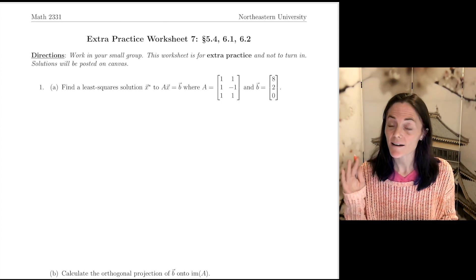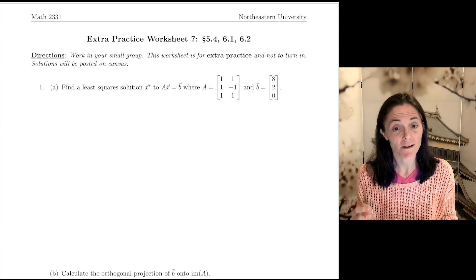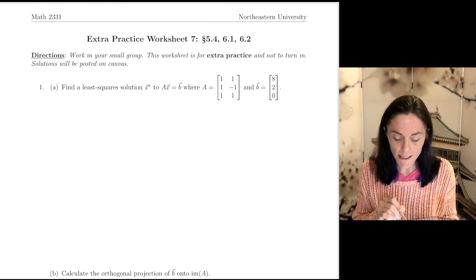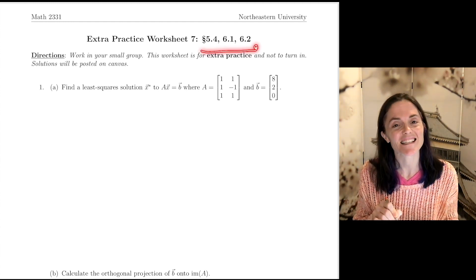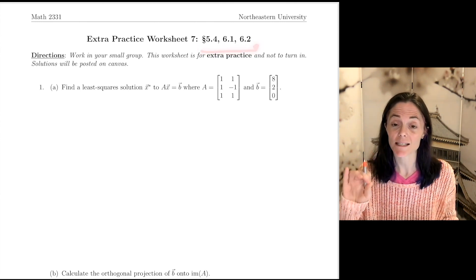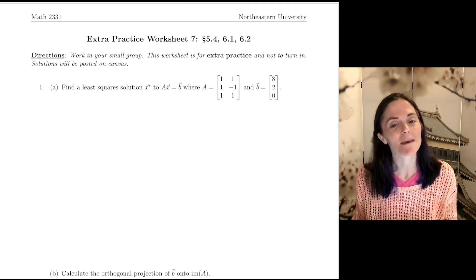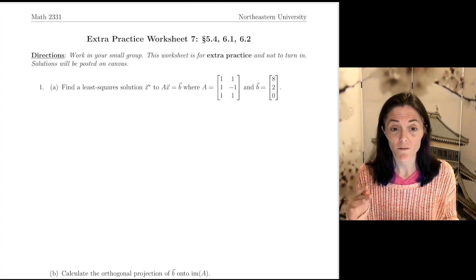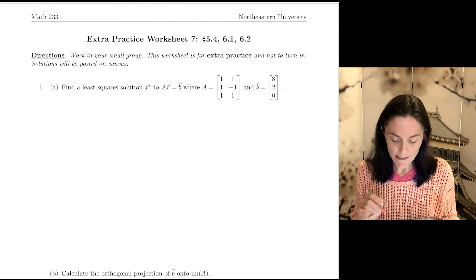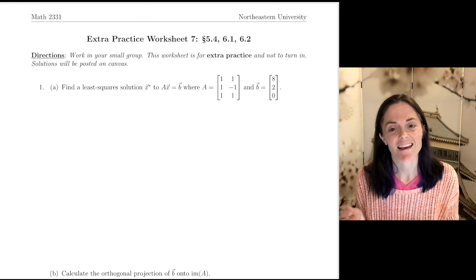We are ready for our next extra practice worksheet for Math 2331, Linear Algebra. This worksheet covers some of the material in sections 5.4, 6.1, and 6.2, which is least squares and determinants. So we begin with number one. We want to find a least squares solution to Ax equals B. We are given A and given B.